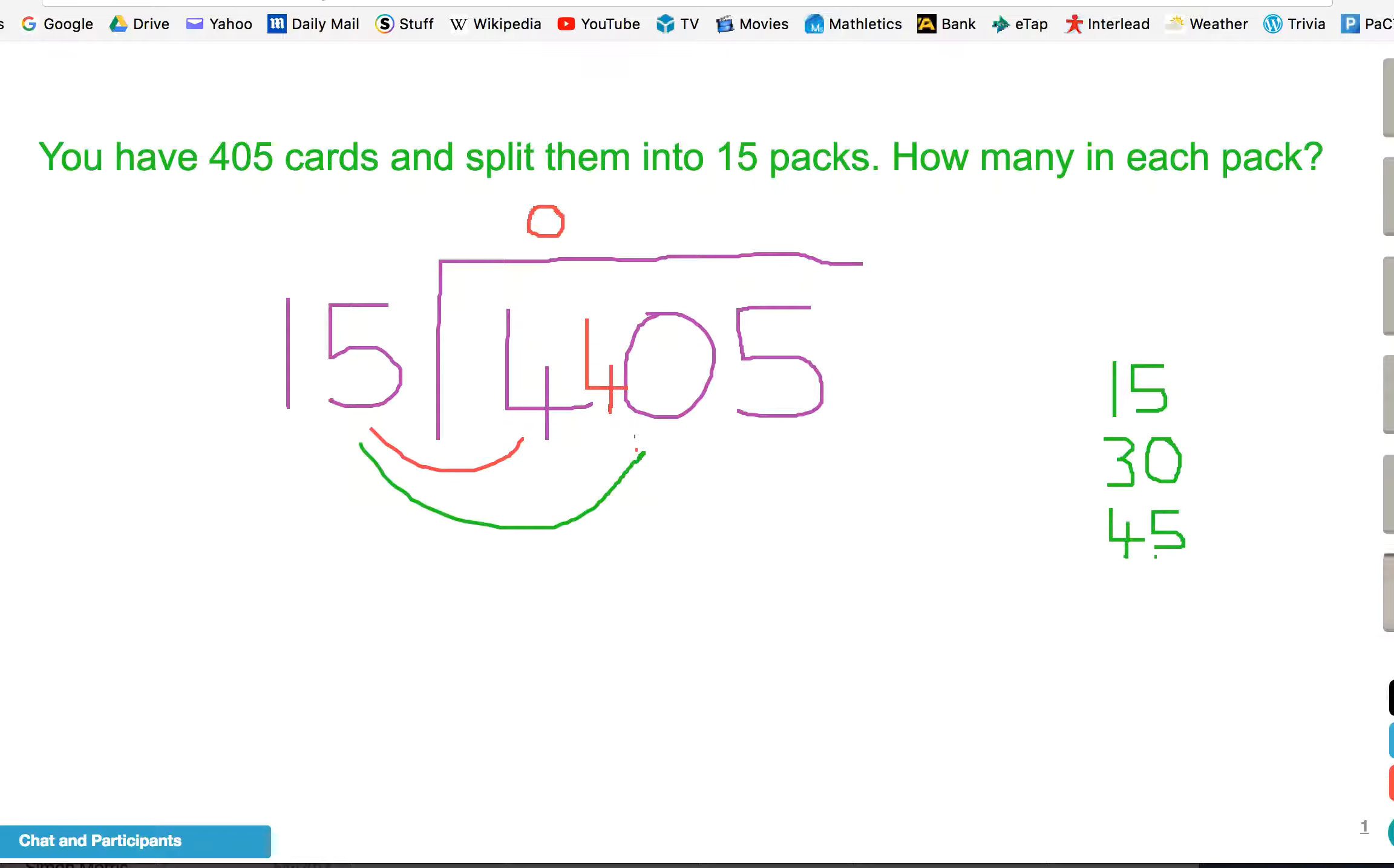Three 15s are 45. And at that point, we've gone past the 40. So just like with short division, we go to the nearest number we can get to without going past the number we're looking for. So how many 15s are in 40? Well, there's 2. So we put 2 at the top there.